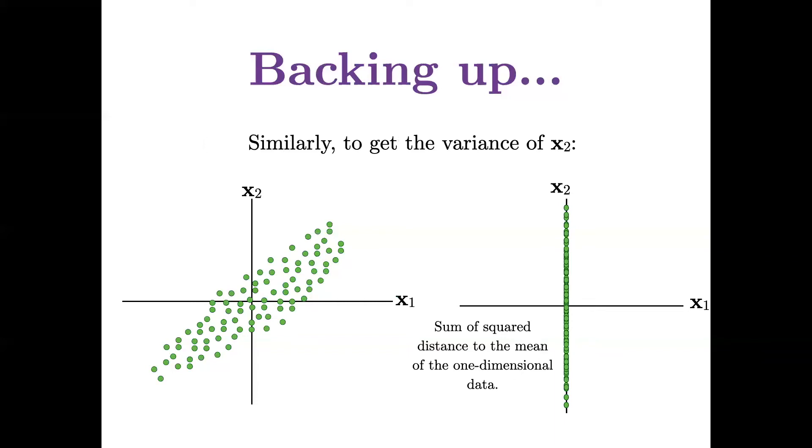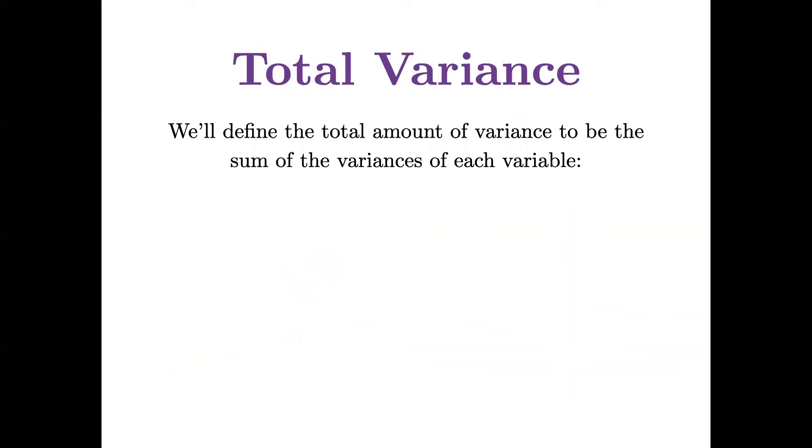And the same thing is true for the variance of x2. If I project the data onto the x2 axis, that's the one-dimensional variable x2, and I would look at the sum of squared distances to the mean or the origin. And now we can define total variance. And the total variance is the sum of the variances of each variable. So if I take the variance of x1 and add it to the variance of x2, that's how much total variance I have in my data.